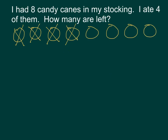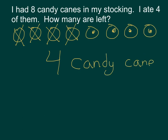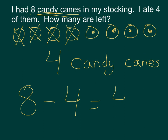How many are left? One, two, three, four. Four candy canes. I know how to spell it because it's back up in my problem. I have a picture. I have an answer with a label. And now I need a number sentence. With a subtraction number sentence, the greatest number — the biggest number — goes first. Eight minus four equals four.